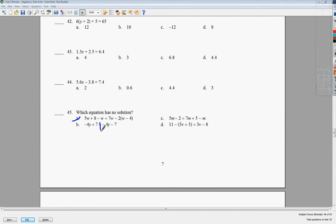For b, I'm going to add 4y to both sides. Negative 4 plus 4 is 0. Negative 4 plus 4 is 0. What I'm left with is a statement that says 7 is equal to negative 7. That's not true. So this is my no solution.